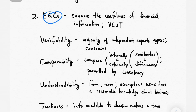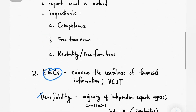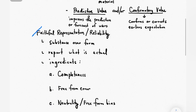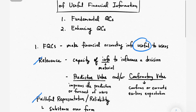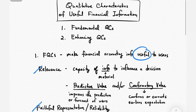Again, for the enhancing qualitative characteristics, we have four: verifiability, comparability, understandability, and timeliness. And that completes this short video on qualitative characteristics.